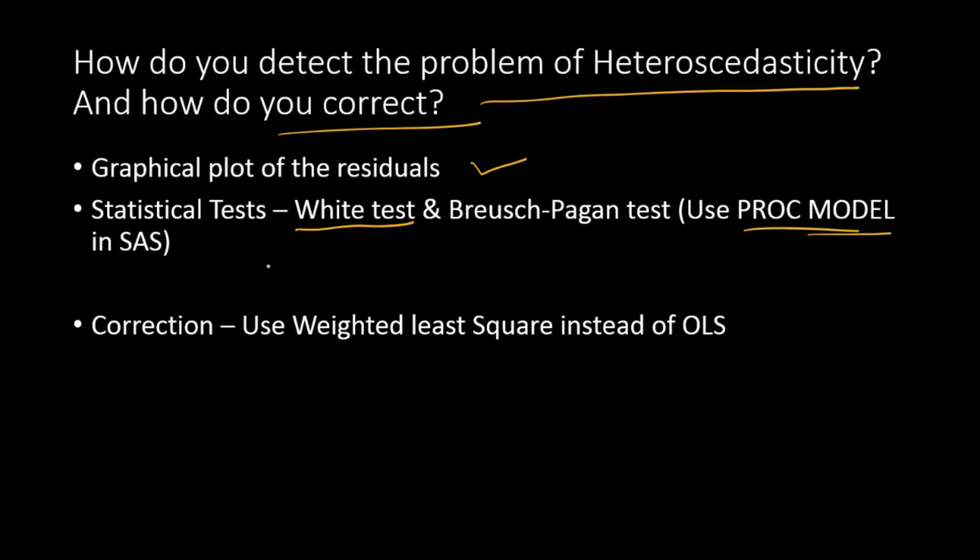How do we correct heteroscedasticity? There are different ways, but one way is to use weighted least squares instead of ordinary least squares. Weighted least squares ensures it handles the change in variation in your cross-section data.